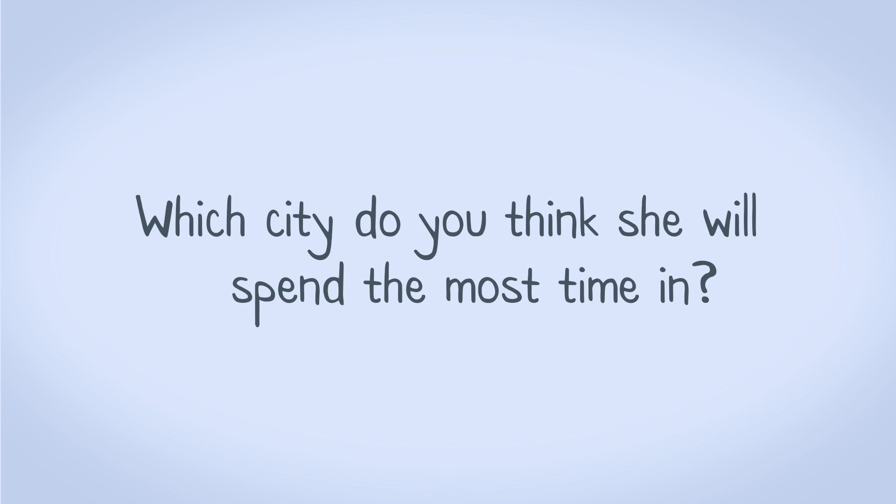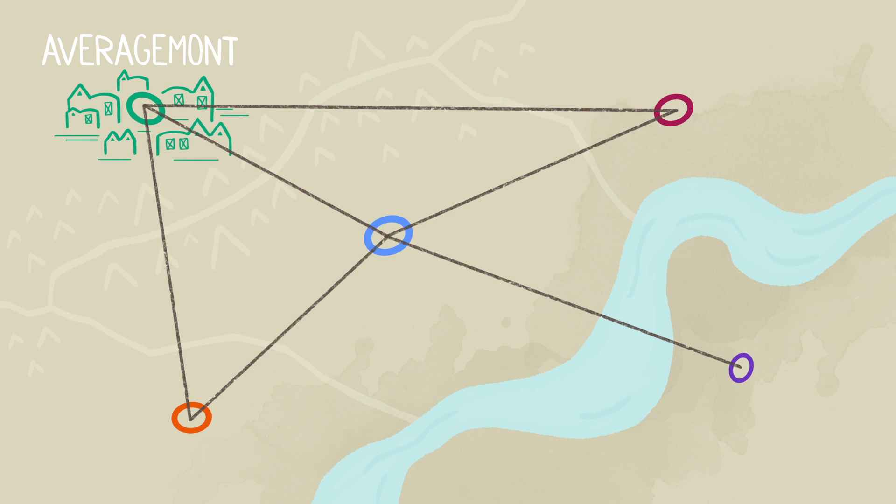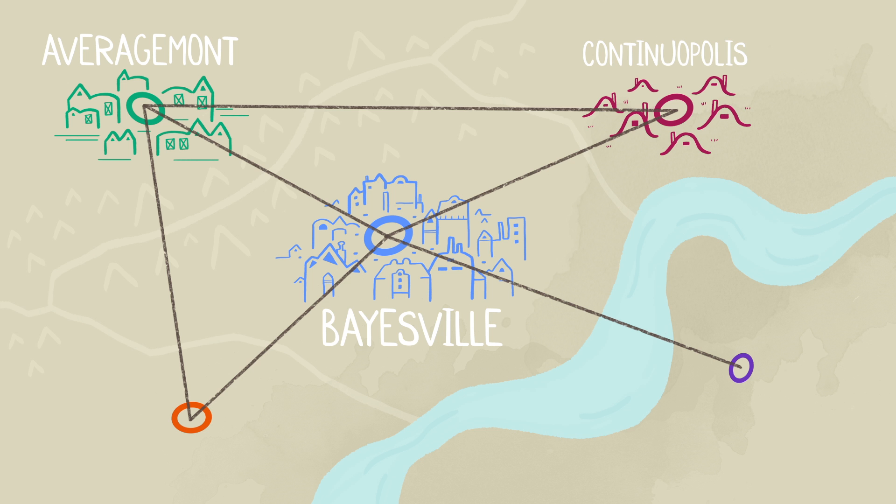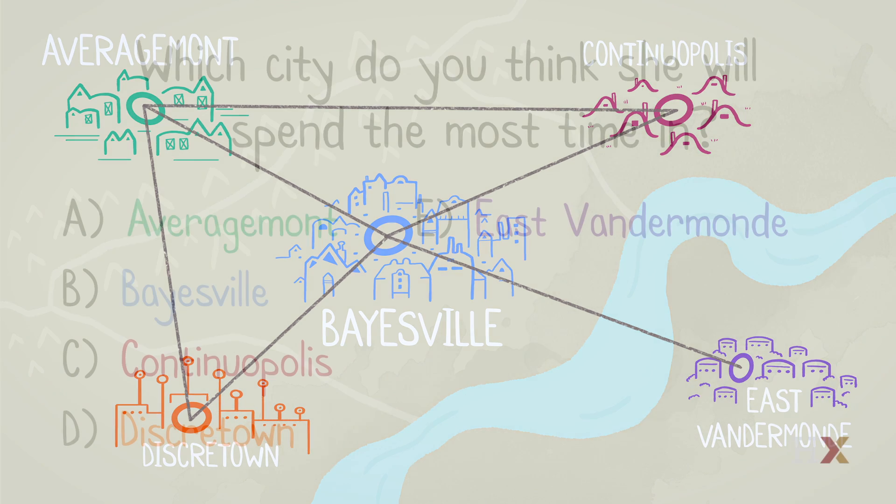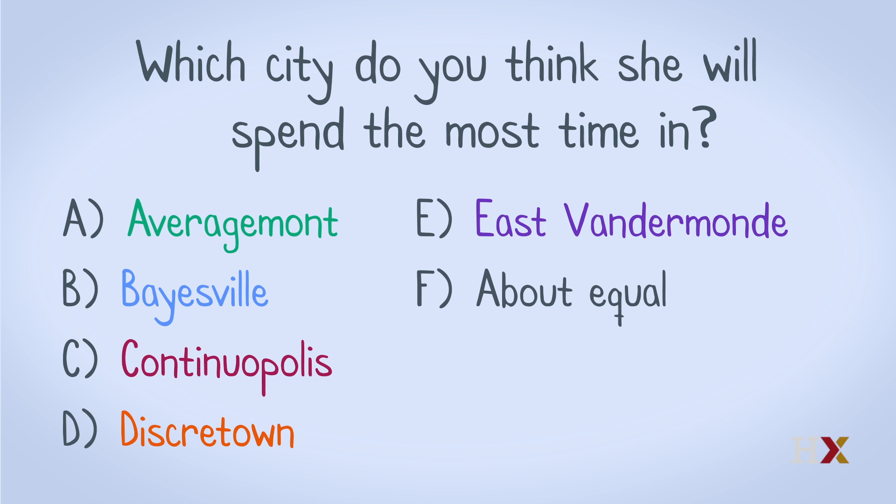In the long run, which city do you think she will spend the most time in? A: Averagemont, B: Baysville, C: Continuopolis, D: Discreet Town, E: East Vandermond, F: about equal among the five cities, or G: it depends on which city she starts out in.